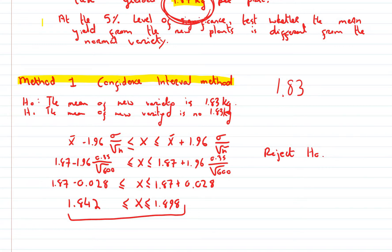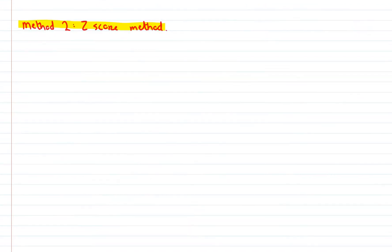Right? So they're probably better to market. They're giving back more kgs per plant. Our next method then is our z-score method.